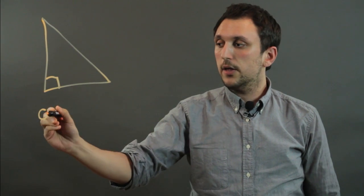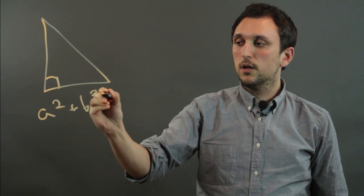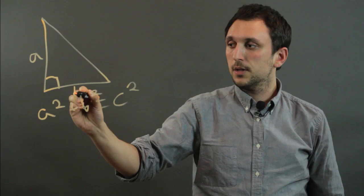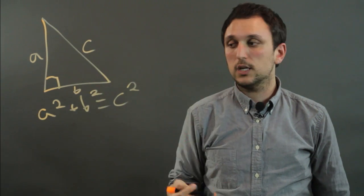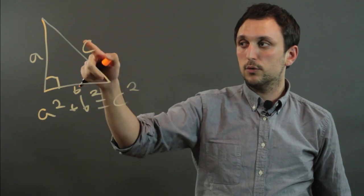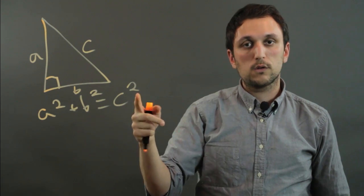The Pythagorean theorem says that A squared plus B squared equals C squared for a triangle with leg A, leg B, and hypotenuse C. So the length of A squared plus the length of B squared equals the length of C, or the hypotenuse, squared.